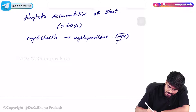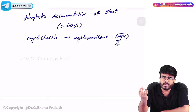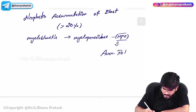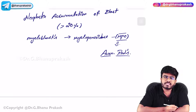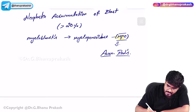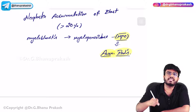Sometimes this myeloperoxidase is going to crystallize within the blast, and this crystallized form of myeloperoxidase is called Auer rods. We can identify the myeloblast based on the myeloperoxidase - if myeloperoxidase is positive or Auer rods are positive, then we can say this cell is a myeloblast.